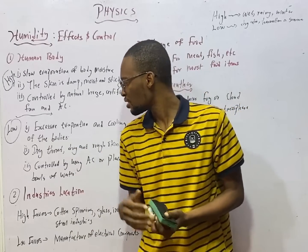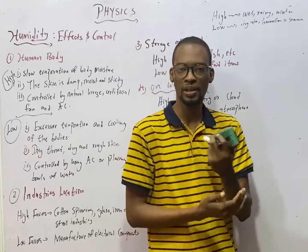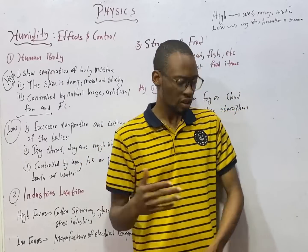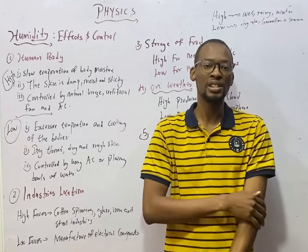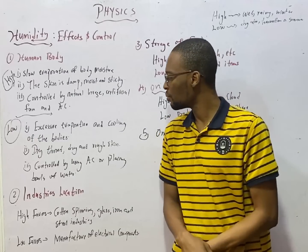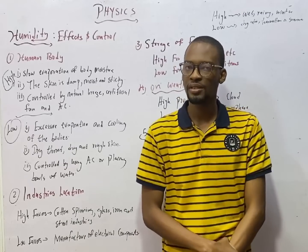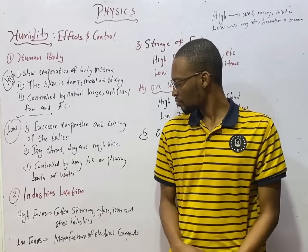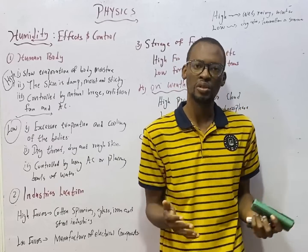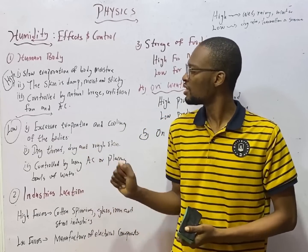How about low humidity? The effect of low humidity — stuff like harmattan, dry air, and summer on your body — is that there is excessive evaporation and cooling of the body. Any wetness on your body dries up quickly, and you experience dry throat and dry, rough skin during low humidity. This can be controlled by using an air conditioner, placing a bowl of water around, or planting flowers.